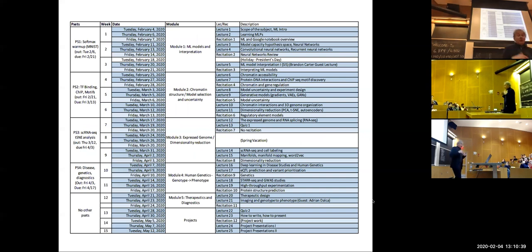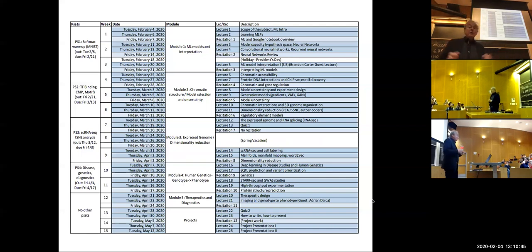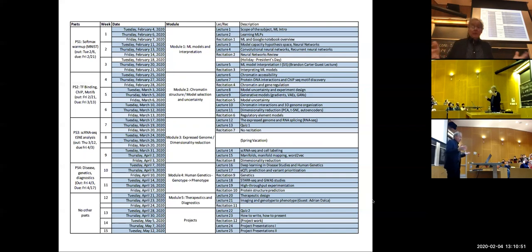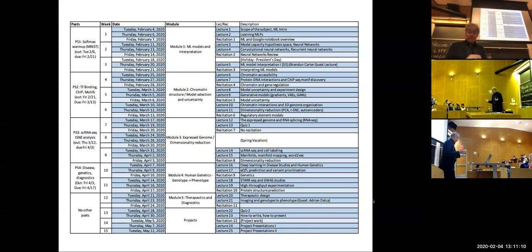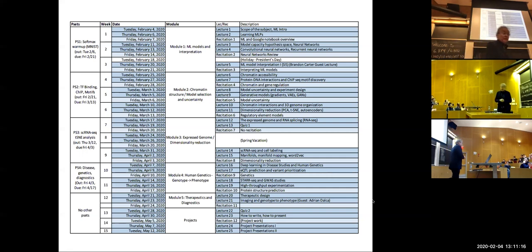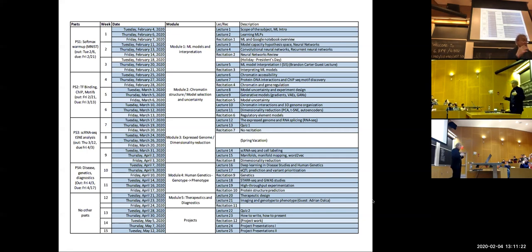This is the general outline for the entire term. There are basically five modules: a machine learning introduction to make sure we're all talking the same language; gene regulation and chromatin structure; the expressed genome; human genetics and how it impacts disease and high-throughput measurements; and finally therapeutics and diagnostics. There are corresponding problem sets on the left-hand side to go with each one of these modules.